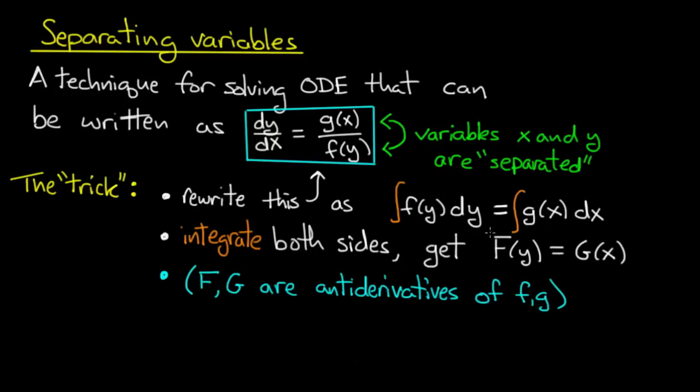So I'll put some integral signs in front of this and I have the integral of f of y dy and the integral of g of x dx. Now let's actually carry out those integrals. So I find an antiderivative of little f, call that capital F, and an antiderivative of little g, call that capital G, and after integration I get capital F of y equals capital G of x.